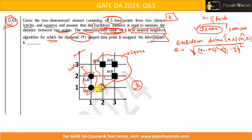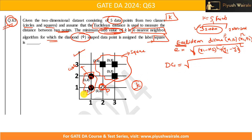First, we need to find the distance between the diamond point and all five data points — the two circles and the three squares. We use Euclidean distance. Let's label the diamond as D, the two circles as C1 and C2, and compute: distance D to C1 = sqrt((2-1)² + (1-1)²) = sqrt(1) = 1.